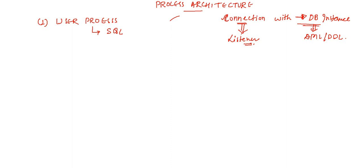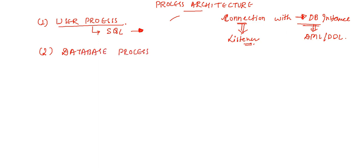Whenever a database instance is started and the user process is connected to the Oracle database instance and they fire a query like DML, create, alter, drop, insert, update, delete - any query - a user process is being generated. So the first process of the process architecture is our user process. Apart from that we have database processes, and under database process we have two types: number one is server process, and number two is background process.